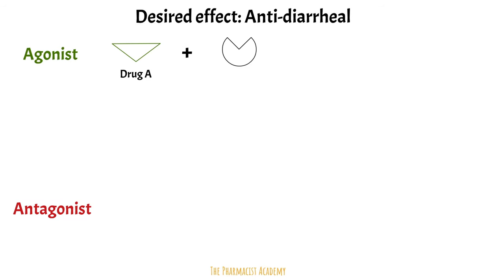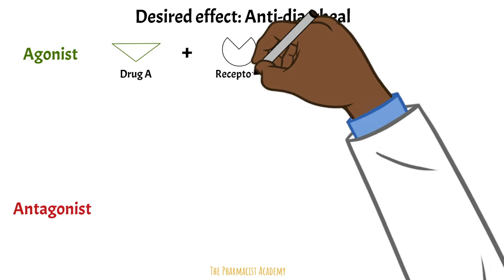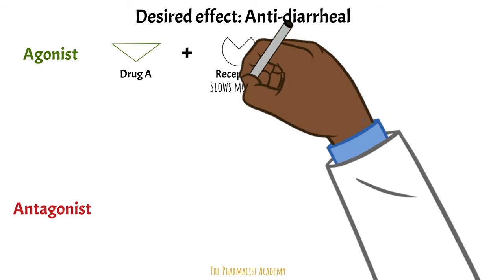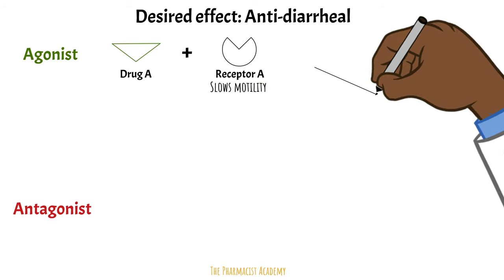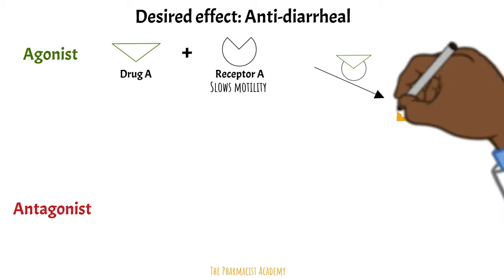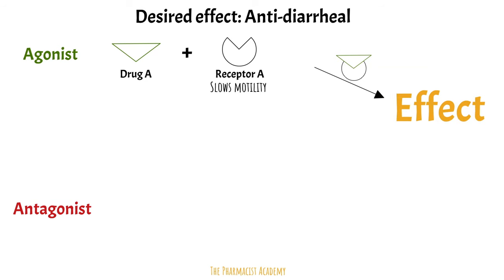Drug A will bind to receptor A. Any ligand or substrate that binds to receptor A and fits perfectly leads to slowing of the GI motility. This will lead to the anti-diarrheal effect we want.